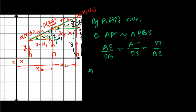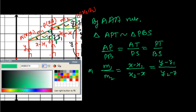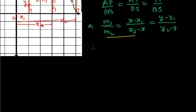Since AP equals m1 and PB equals m2, we have m1/m2 = (x minus x1)/(x2 minus x).